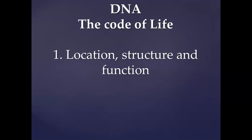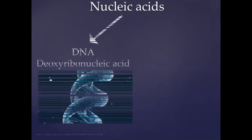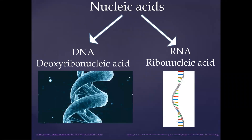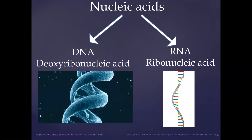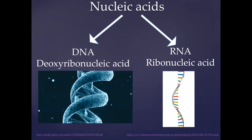DNA, the code of life. In this first video we look at the location, structure, and function of DNA. DNA is in a group of organic compounds known as nucleic acids. There are two types of nucleic acids: DNA, or deoxyribonucleic acid, and RNA, known as ribonucleic acid. We will discuss these two across the course of this section.